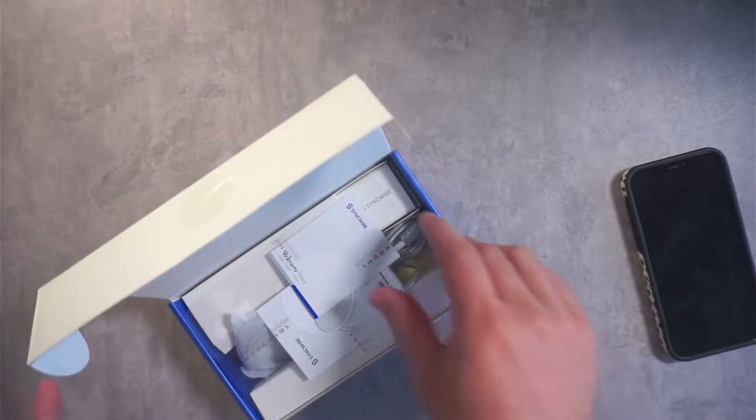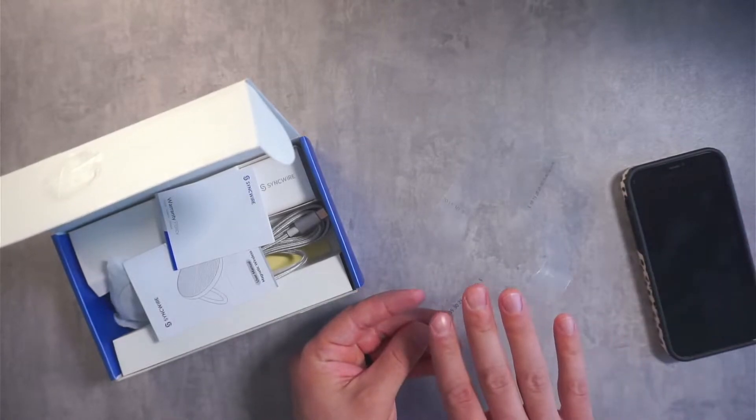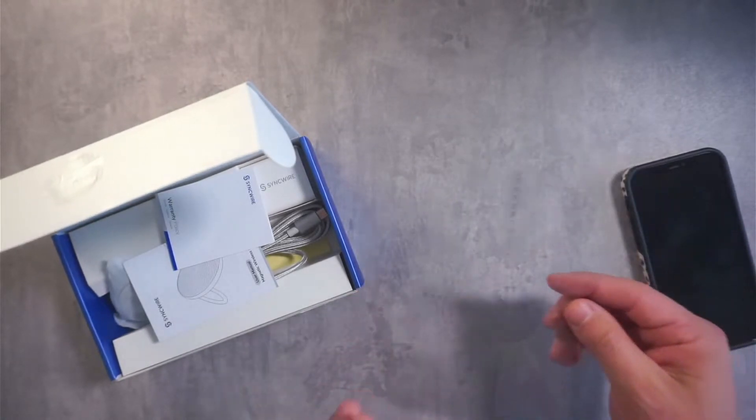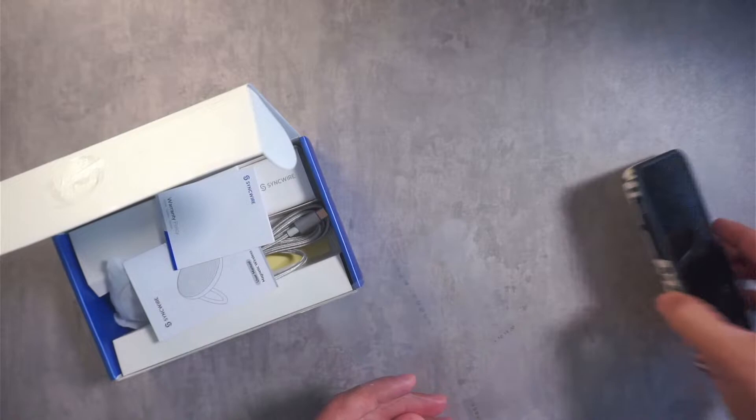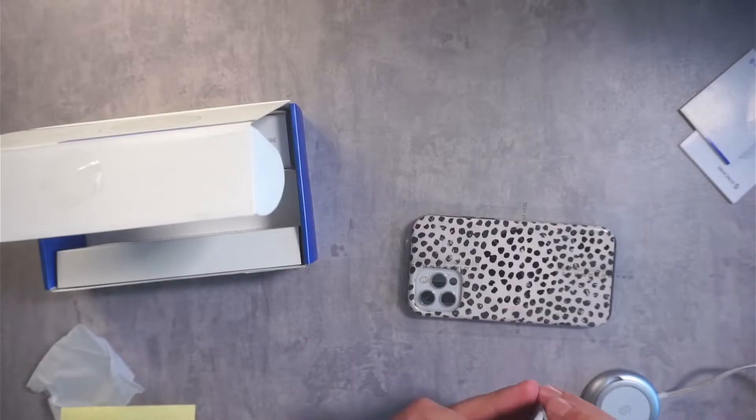So basically how this works, they give you this guide. This pretty much centers your device where you're going to want to place the magnet. It's got the camera cut out. So if you go like this, basically this comes off like this.